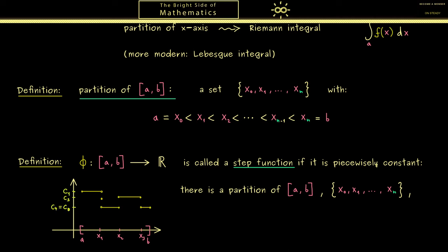Indeed what could happen is that some values coincide. So here we have that the value in this interval is the same as in this one. This is not a problem. The important thing is that for each interval we have such a number cⱼ, which means we have n of them.